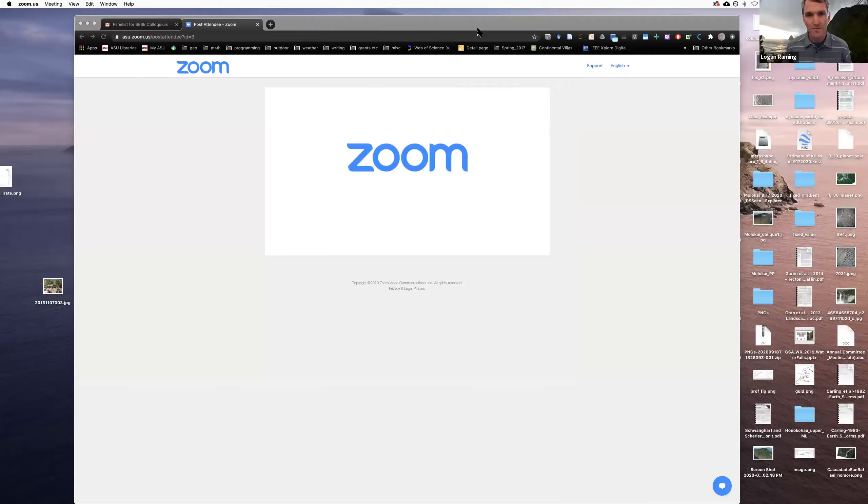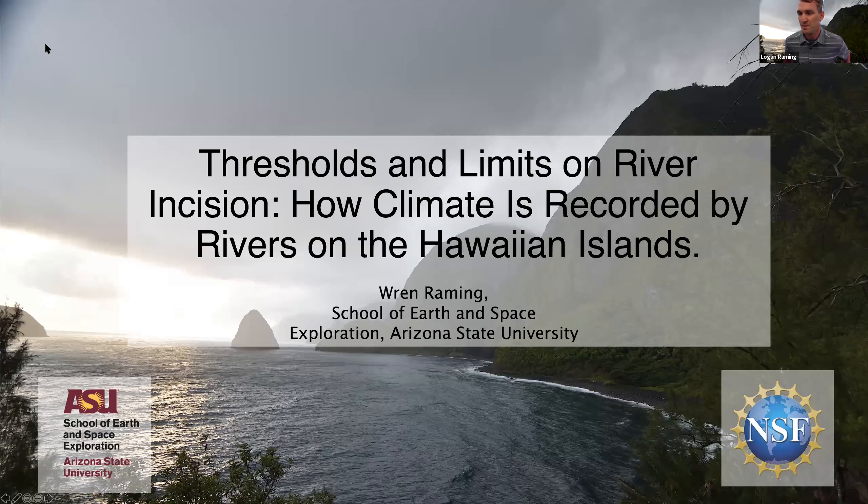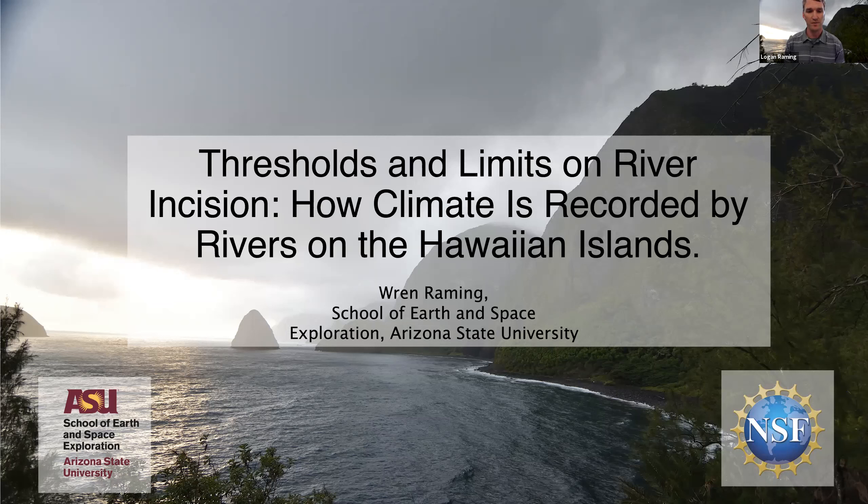Today I'm going to be talking about thresholds and limits on river incision and how climate is recorded by rivers on the Hawaiian Islands. Hawaii presents an ideal natural experiment for understanding how climate drives river incision. Here's a figure of mean annual rainfall for the state of Hawaii. There's quite a wide range of climate. The red colors reflect dry climate comparable to Arizona rainfall, while the wet side shows really high rates of rainfall, some of the highest on Earth. Places like Kauai and Maui see rainfall rates in excess of 10 meters per year.